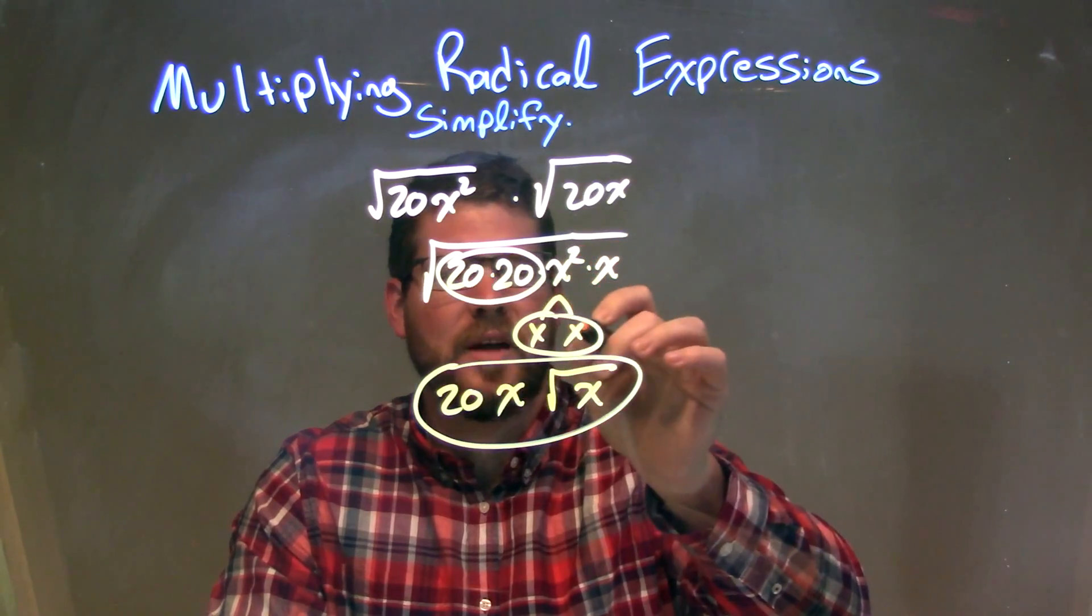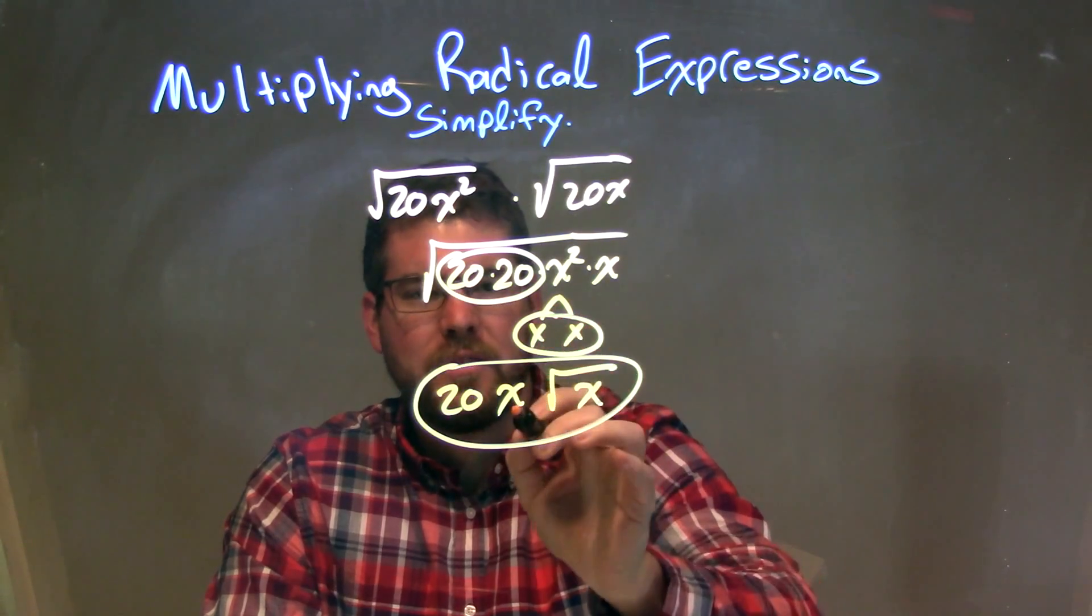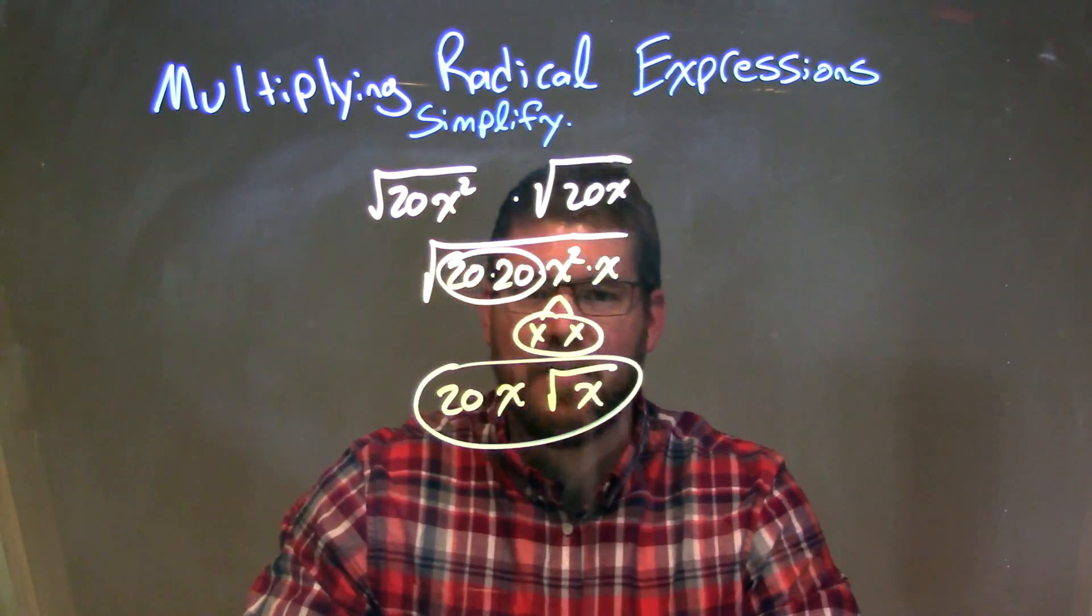Well, x squared breaks down to be x times x. I already have my pair of 20s. I can see a pair, put a single on the outside. A pair of x's, single on the outside. And then this one x stays on the inside, didn't have a pair.